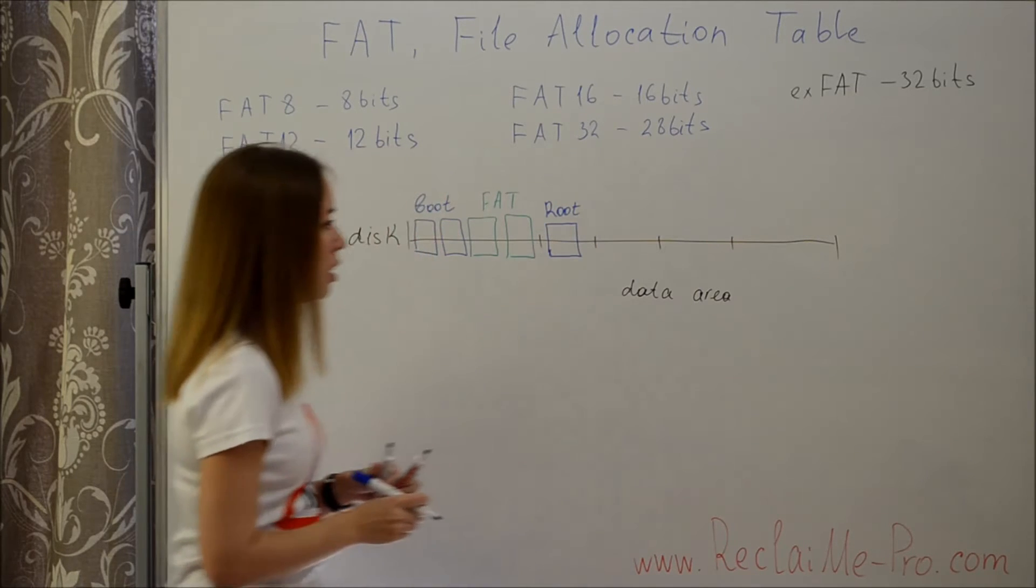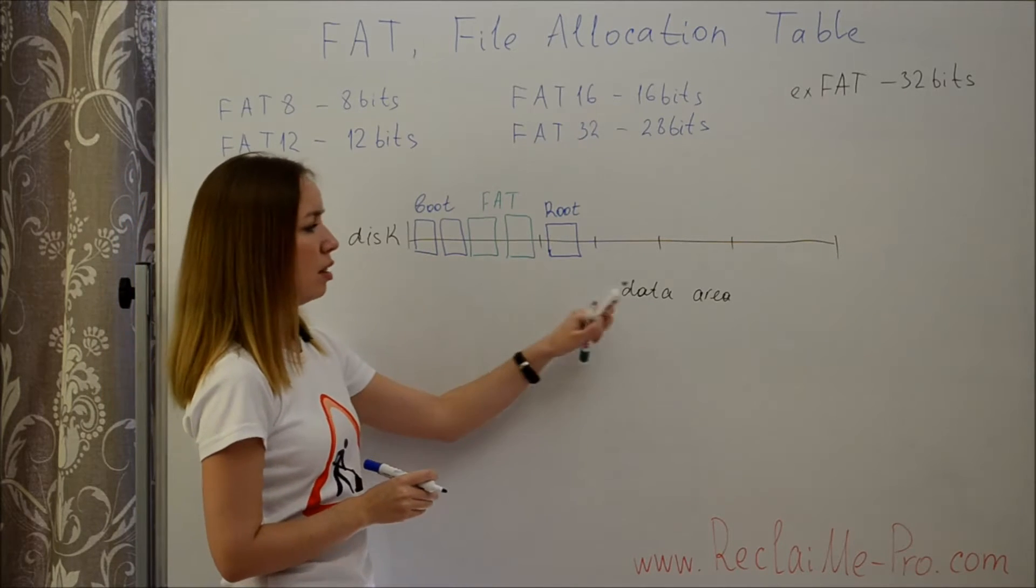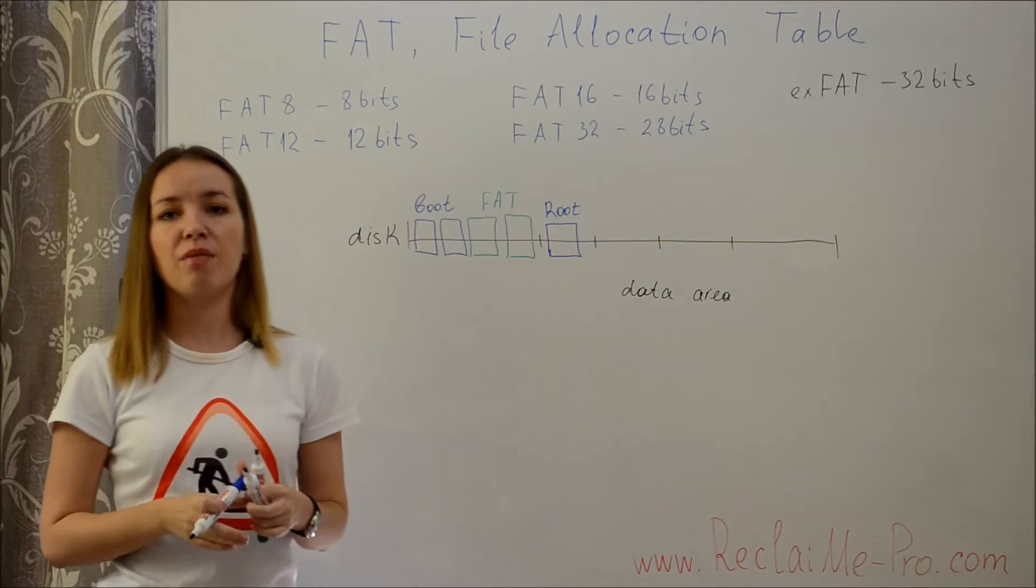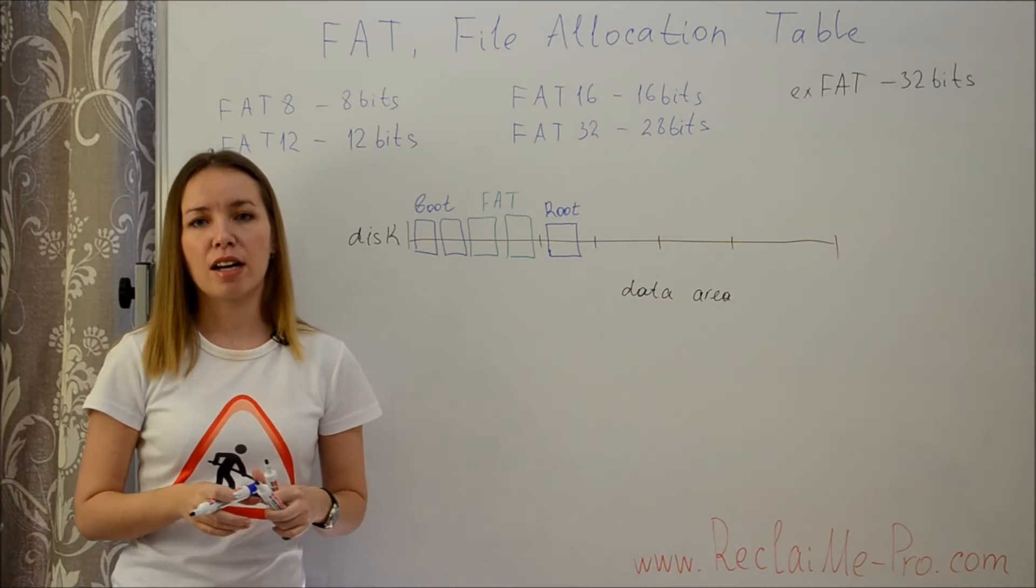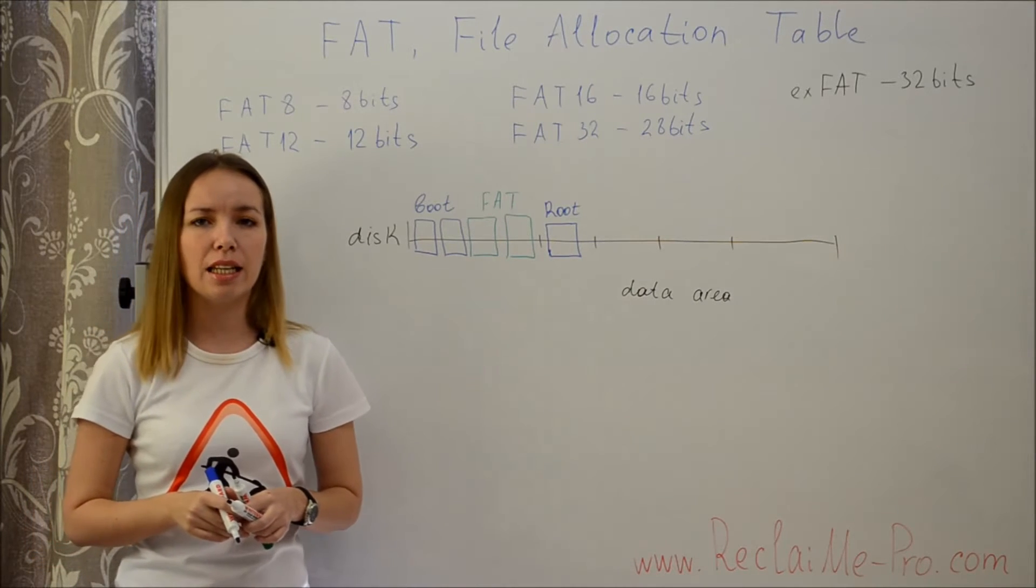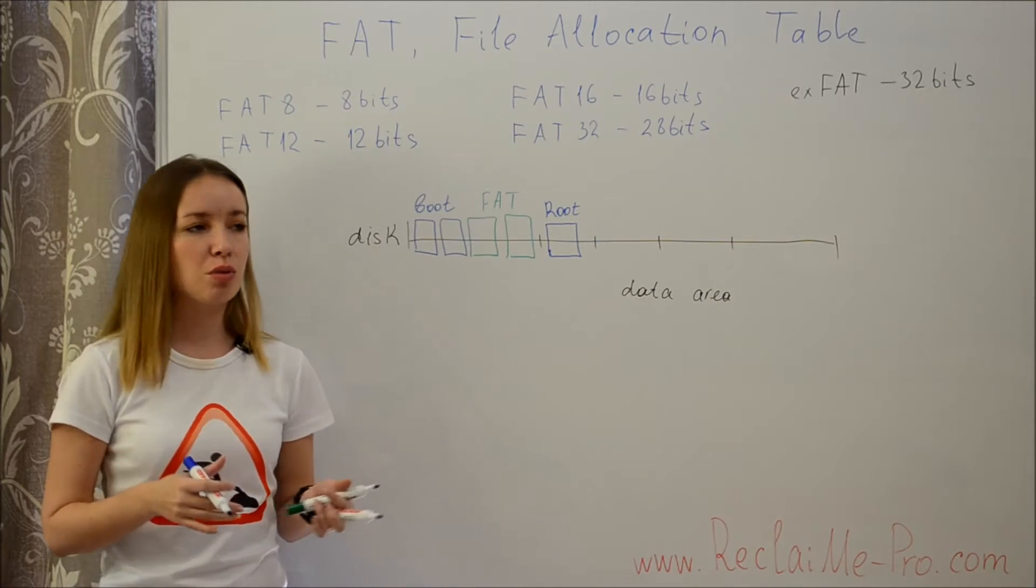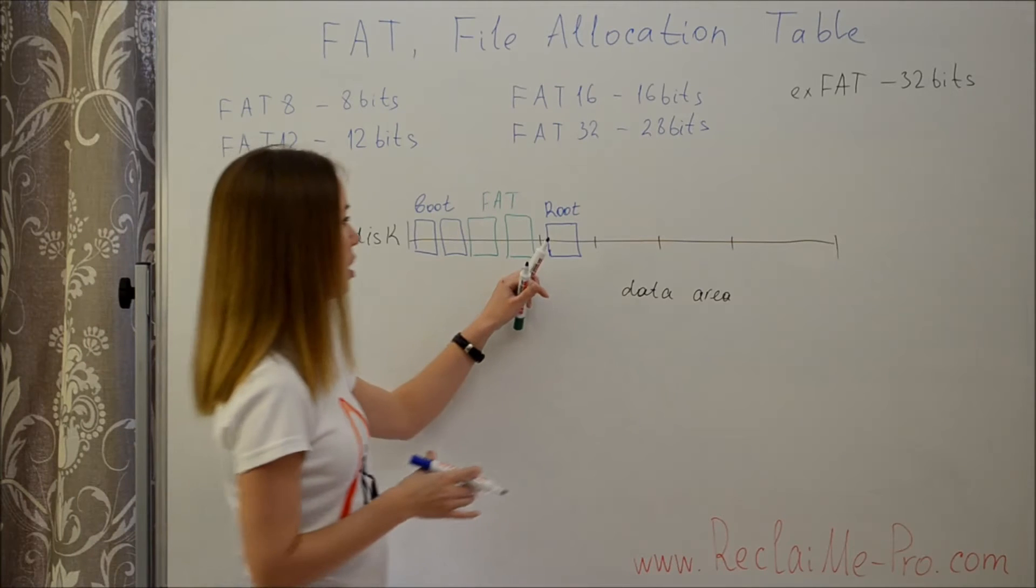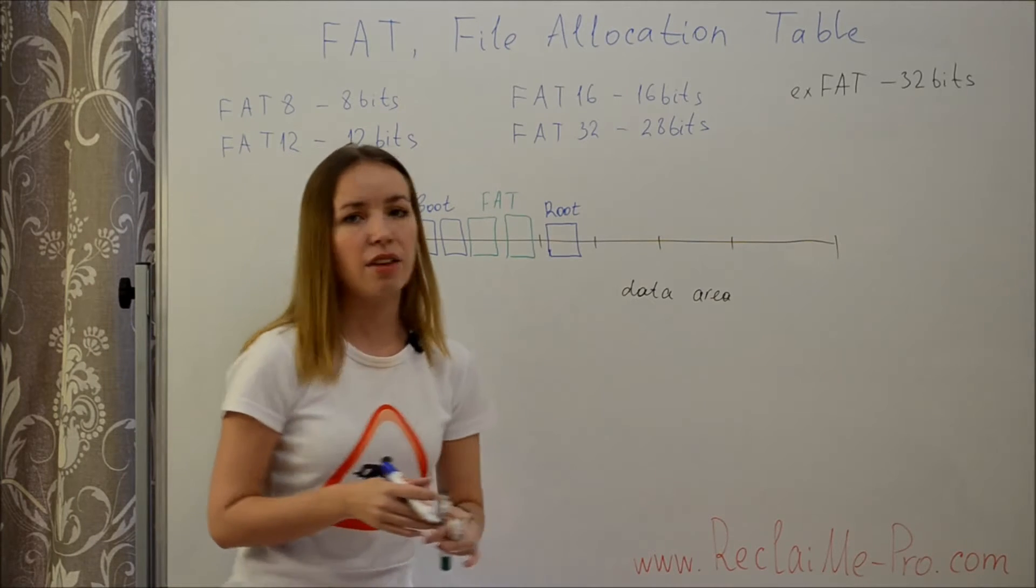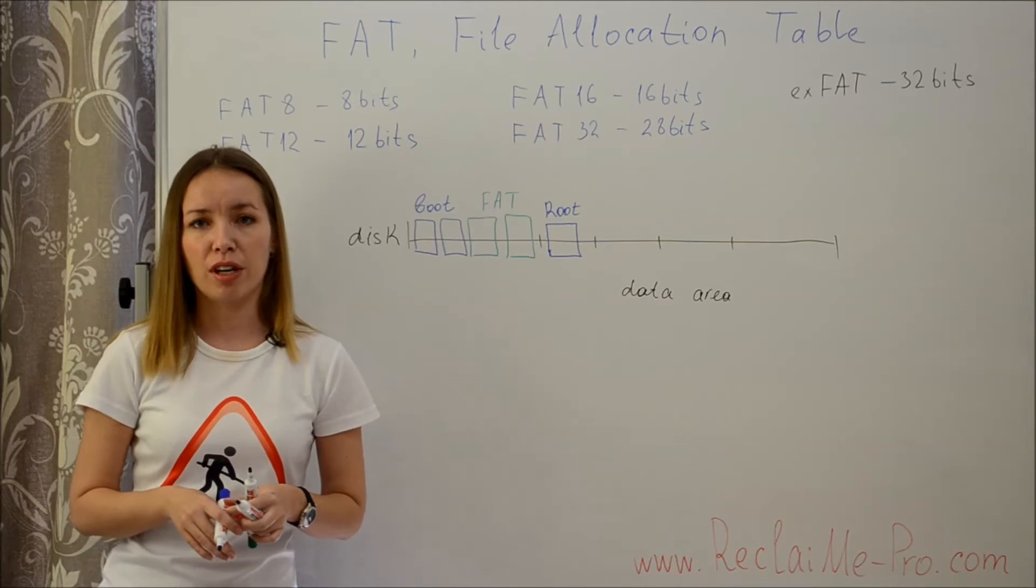All file system elements - boot sectors, FAT tables and the data area - are stored either continuously or with some gaps. For example, in extended FAT there may be empty space between FAT tables and the data area to ensure the proper alignment on some USB drives.